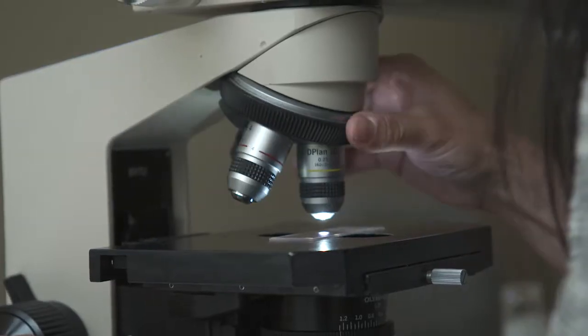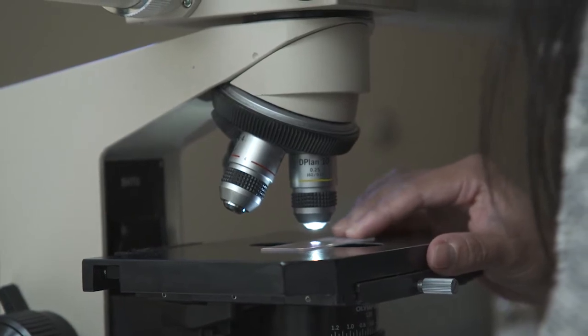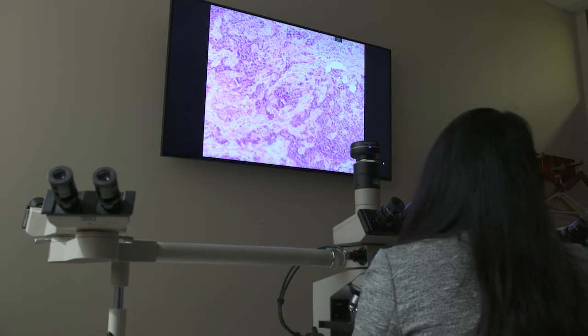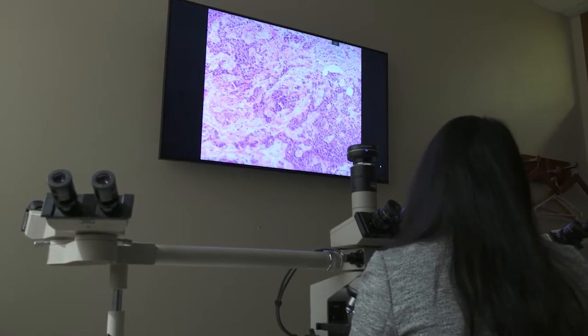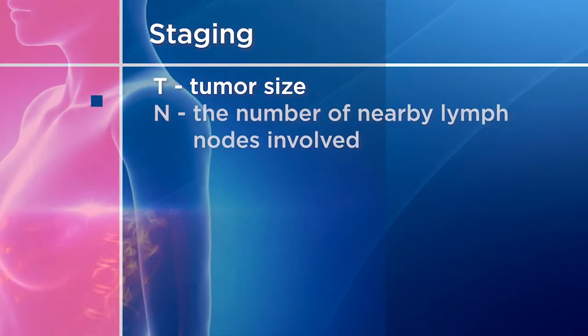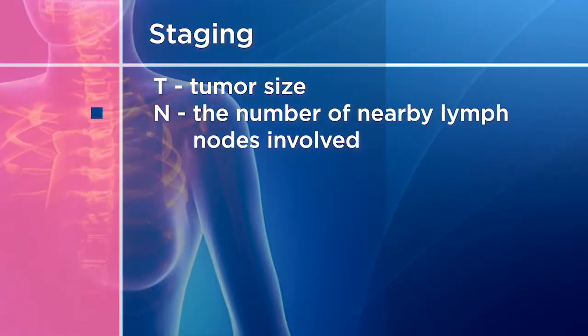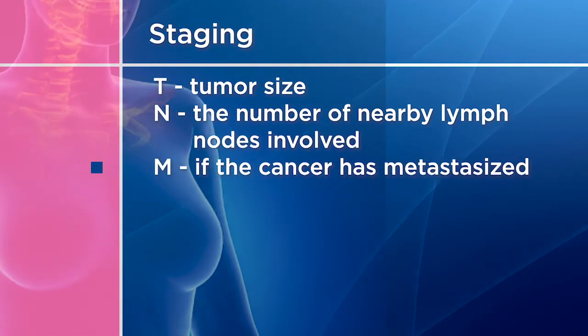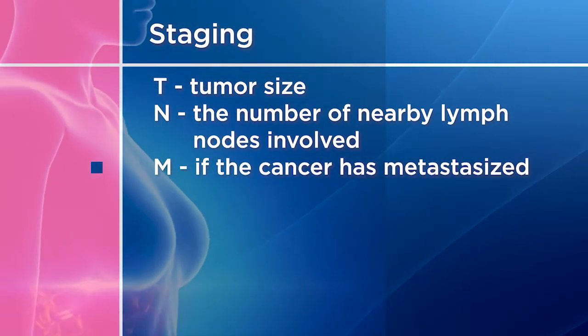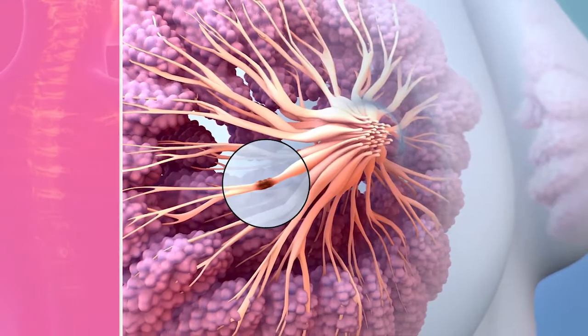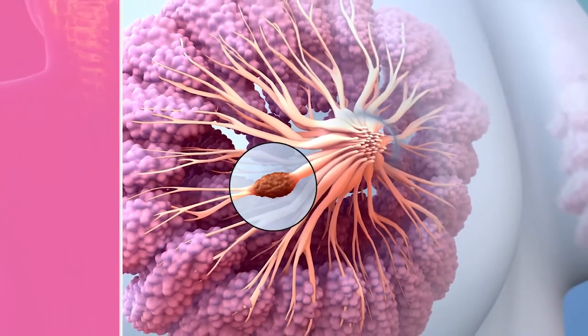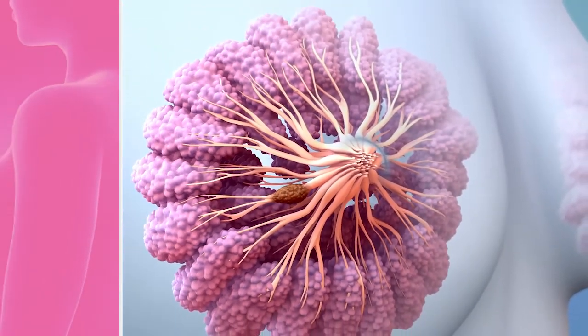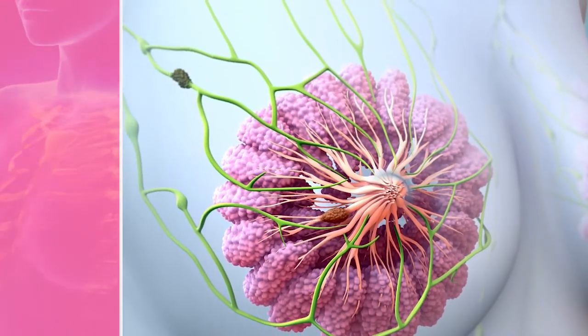Your healthcare provider will review your pathology report, which has the results of the removed tissue. The stage of your cancer is based on the size of your tumor and if it has spread out of the breast tissue. It is described by the following letters: T for tumor size, N for the number of nearby lymph nodes involved, and M if the cancer has metastasized or spread to other organs. The type of treatment you will need depends on the stage, location, and size of your tumor, and how much cancer may have spread.